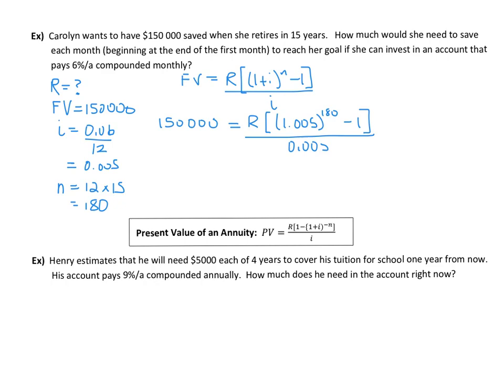So to get R by itself, the first thing we want to do is multiply both sides by 0.005 to get rid of it on the bottom here. So this gets multiplied by 0.005. So that undoes that. And 150,000 times 0.005 gives us 750.